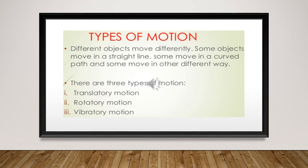Now let's come to the types of motion. Different objects move differently. Some objects move in a straight line, some move in a curved path, and some move differently. There are three main types of motion: the first one is translatory motion, the second one is rotatory motion, and the third one is vibratory motion.